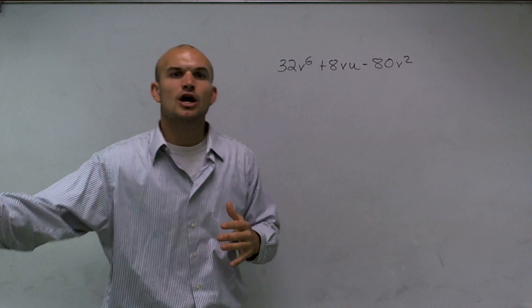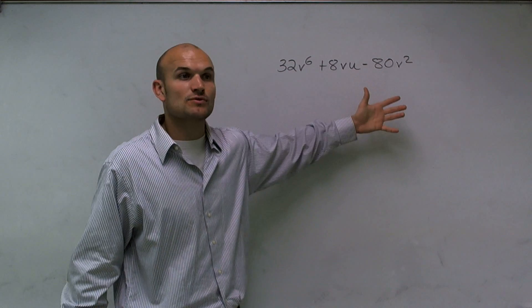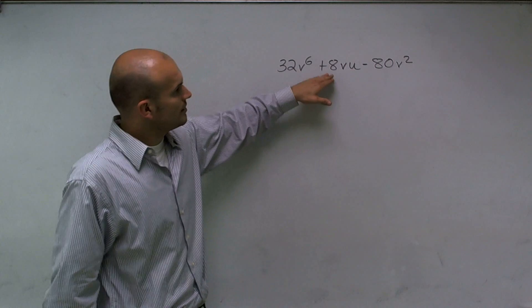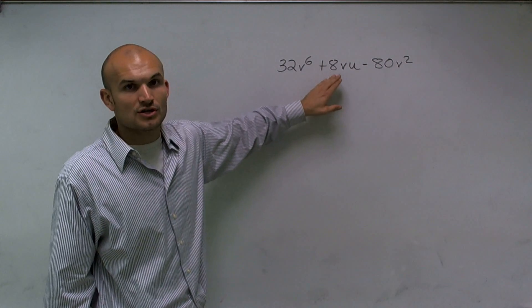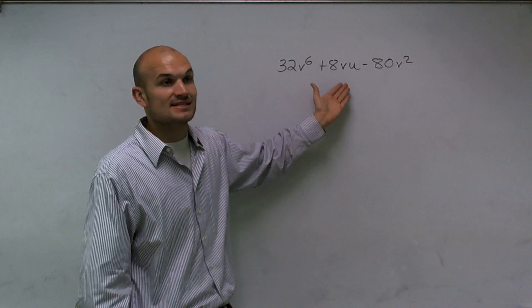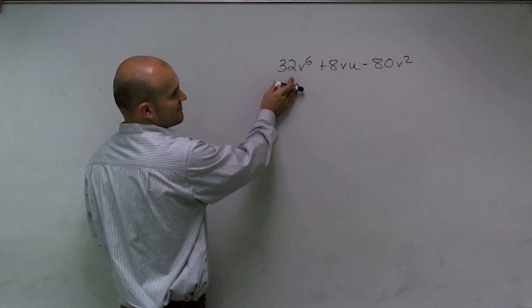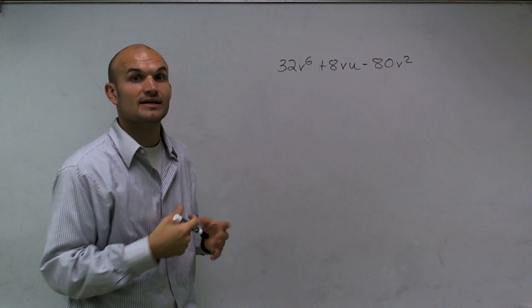But what is going to be the largest number out of 32, 8, and 80 that goes into all of them? Well, obviously, it cannot be a number that's larger than 8 because no number larger than 8 evenly divides into 8. 8 is the largest number that divides into 8. So I look at, does 8 divide into 32? Yes, it does. And does 8 divide into negative 80? Yes, it does.